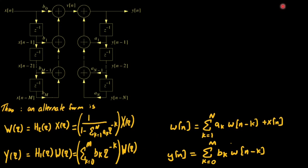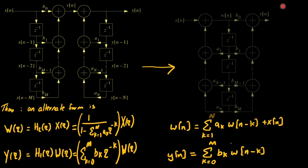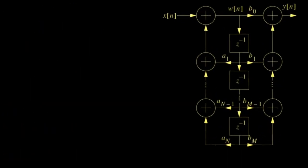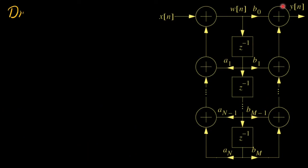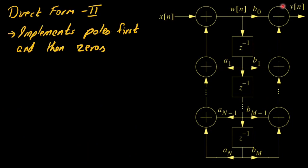So this leads us to the second block diagram representation which is more compact and often considered as a canonical form representation. More formally it is known as direct form 2. In this form poles are implemented first and then zeros since we have commutated h1 and h2 system functions.